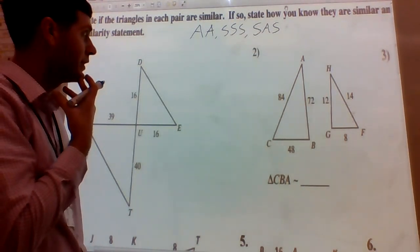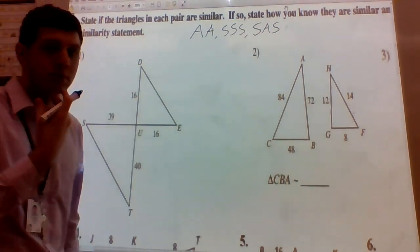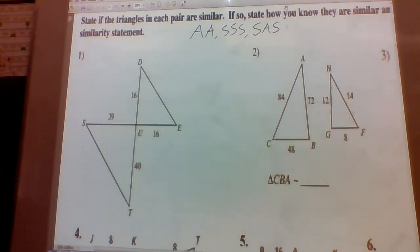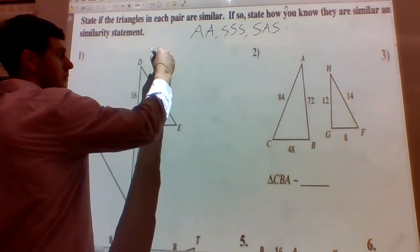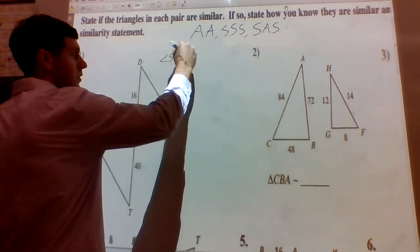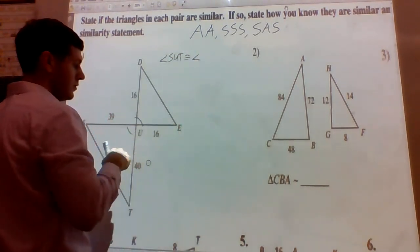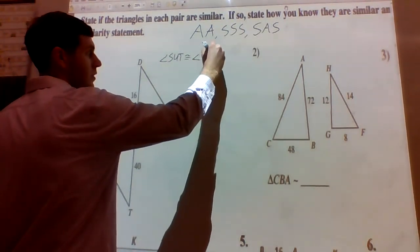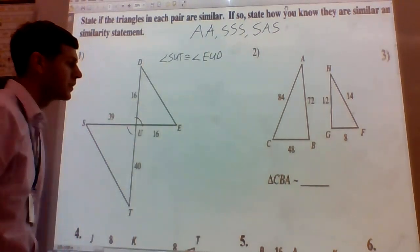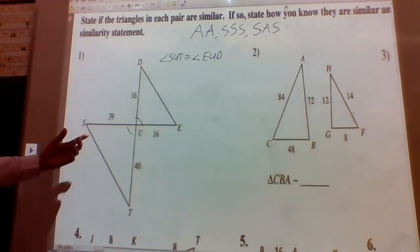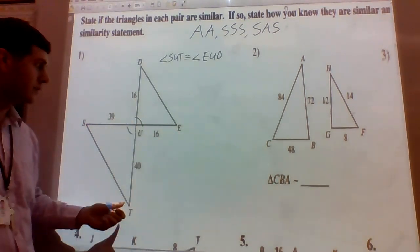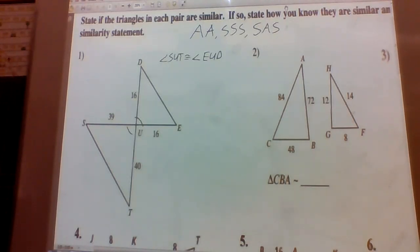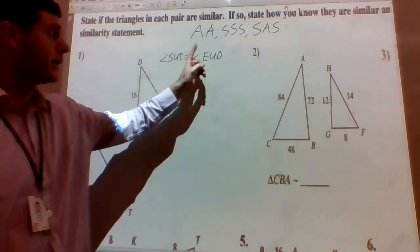So angle-angle, side-side-side, and side-angle-side similarity theorems. For number one, the first thing I want to look for is angles. Do we have any pairs of congruent angles? Yes — angle SUT is congruent to angle EUD. Do we have any other pairs of angles that are congruent? It doesn't seem like we have enough information about angle S and E or angle T and D. So we may have one pair of angles, meaning we can't use angle-angle.